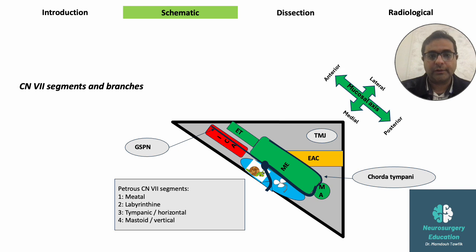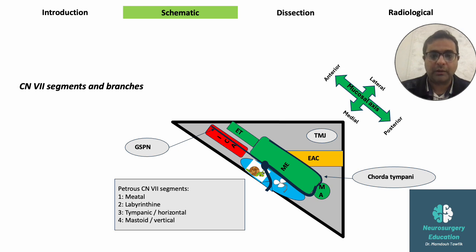Two major branches exist. First, the greater superficial petrosal nerve (GSPN), starting at the geniculate ganglion — which is the location of the junction of the labyrinthine and tympanic segments — and running anteriorly, parallel to the mucosal axis, medial to the Eustachian tube towards the foramen lacerum. Another important branch is the chorda tympani, running on the lateral wall of the middle ear.